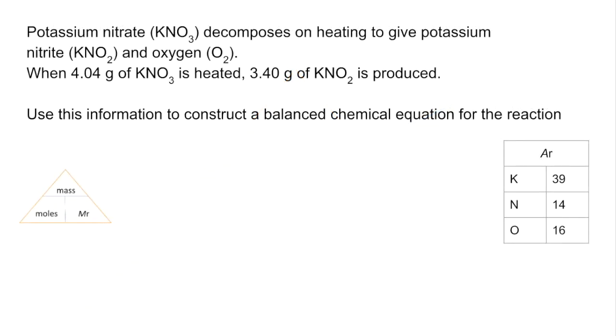So we'll start with this question: potassium nitrate KNO3 decomposes on heating to give potassium nitrite KNO2 and oxygen O2. When 4.04 grams of potassium nitrate is heated, 3.40 grams of potassium nitrite is produced. We have to use that information to construct the balanced equation for the reaction. You'll notice the mass moles MR triangle and the relative atomic masses for potassium, nitrogen, and oxygen that we're going to calculate the MRs from.